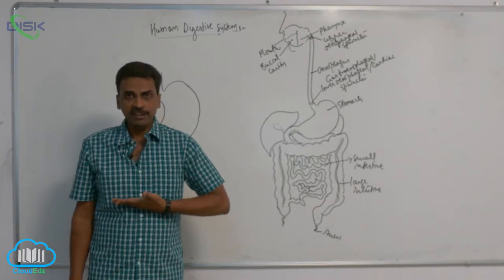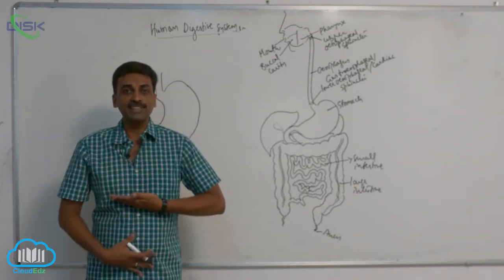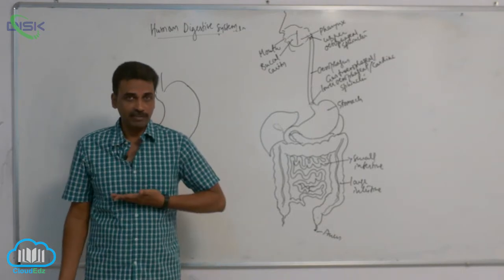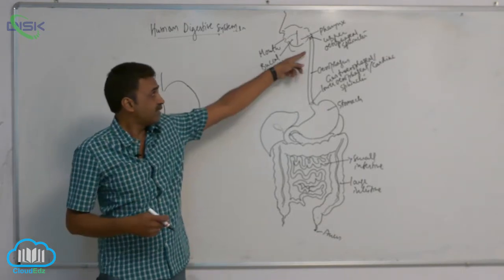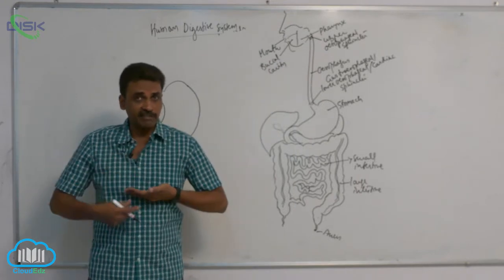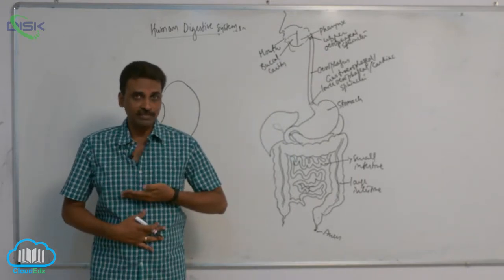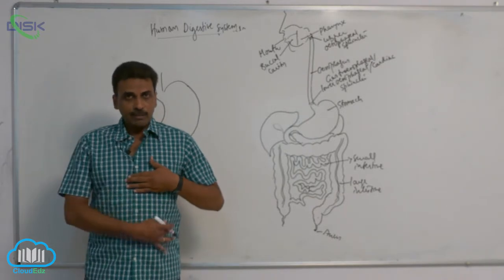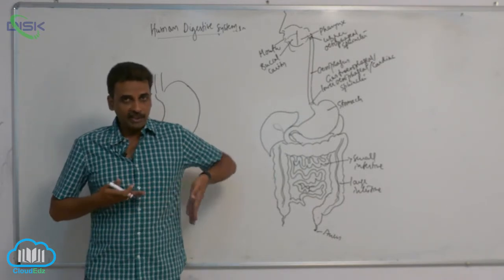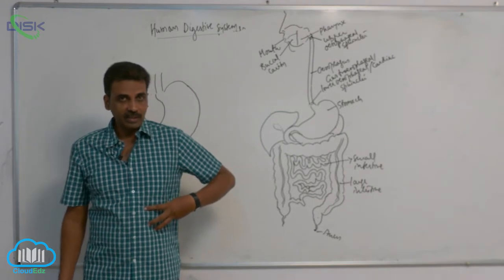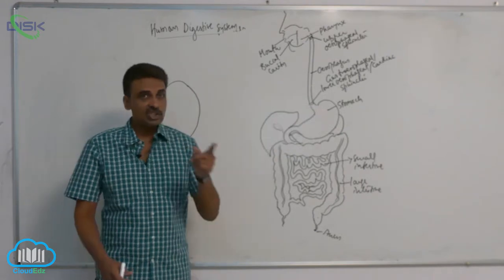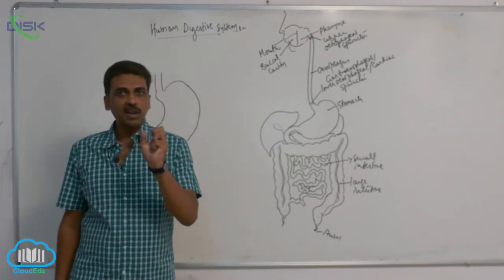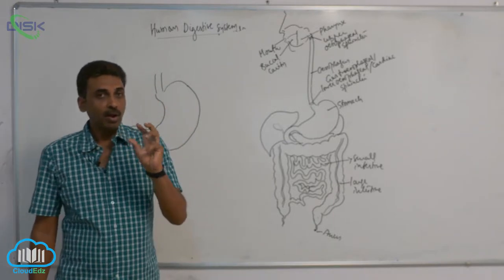We have a diaphragm — in between the thorax and abdomen, there is a muscular partition called the diaphragm. The esophagus pierces the diaphragm and enters into the abdomen. In this abdomen, in the upper left quadrant, you can see a J-shaped stomach. It is a muscular, hollow organ.